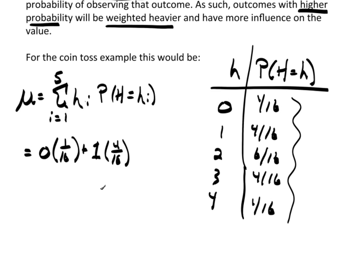And then, the next one is a 2 times the probability of observing a 2, which is 6/16ths. Plus, the next one is a 3 times the probability of observing a 3, which is 4/16ths.